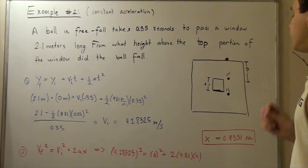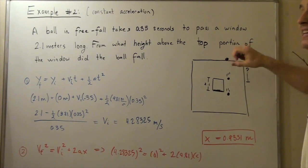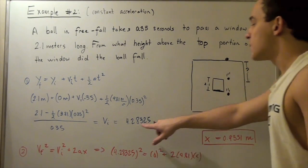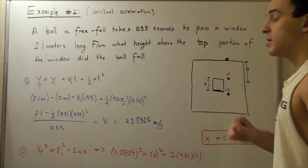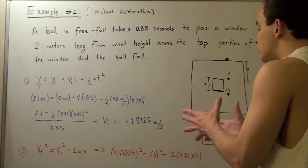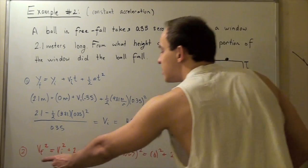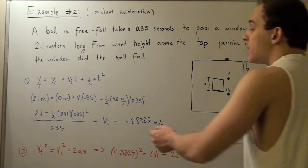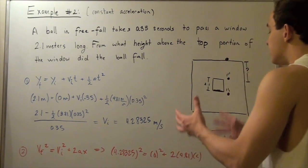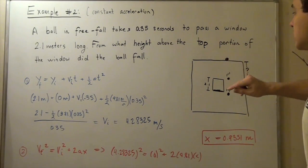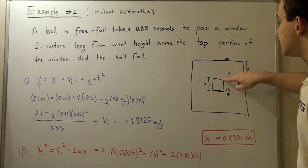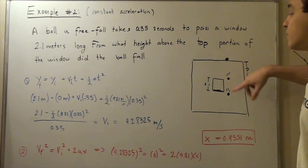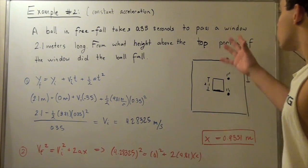Solving for v_initial, we get 4.28325 meters per second. In other words, the velocity at the roof is 0, and when the ball reaches the top of the window, its velocity is 4.28325 m/s. Now moving to our second step, we re-label this as our final velocity, since the initial velocity from the roof is 0 and the distance from roof to window top is what we're solving for.